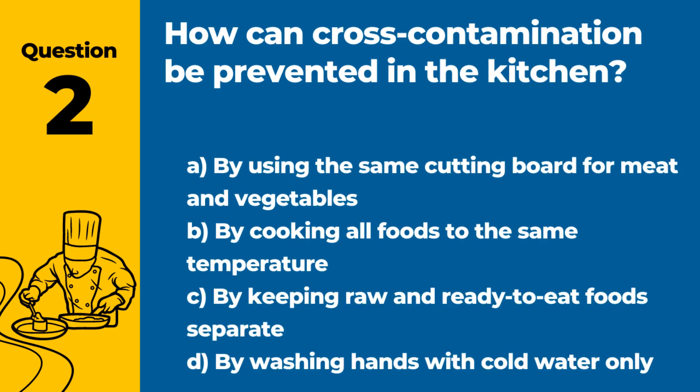Question 2. How can cross-contamination be prevented in the kitchen? Answer: C. By keeping raw and ready-to-eat foods separate. Preventing cross-contamination involves separating raw and cooked foods during storage and preparation.